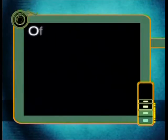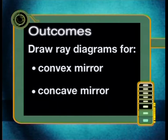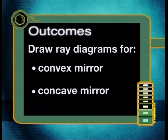So far we've looked at the images formed when light is reflected off straight mirrors. Now we will look at mirrors that are not straight. By the end of today's lesson you will be able to draw the ray diagram for a convex and a concave mirror, and explain how images are formed in convex and concave mirrors.